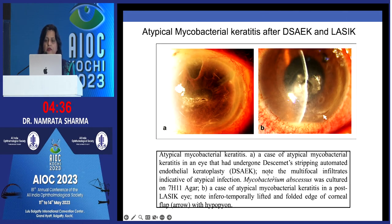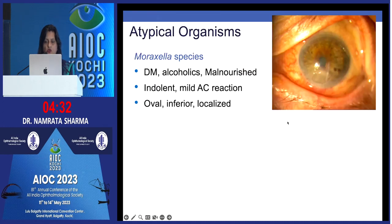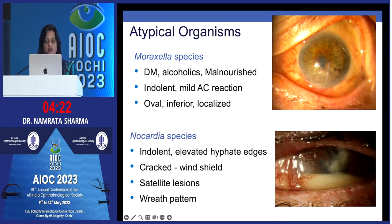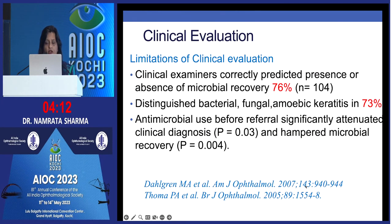Atypical mycobacterial keratitis can also occur after DSAEK and LASIK. Moraxella tends to be inferior and oval in diabetics and alcoholics with hardly any AC reaction. Nocardia classically has a cracked windshield-like effect and also a wreath-like or flower-like pattern. At least three-fourths of the time clinicians can correctly predict the organism, but microbiology remains the mainstay.